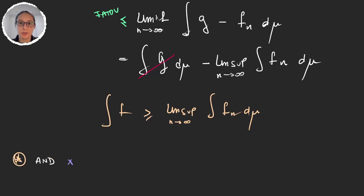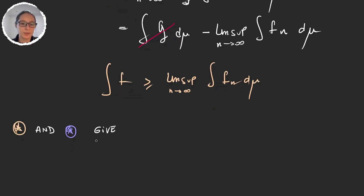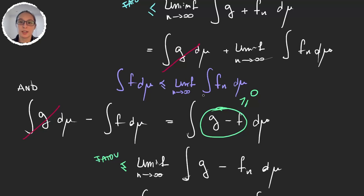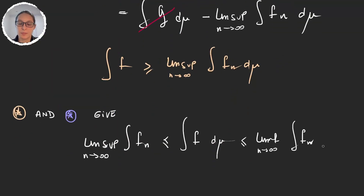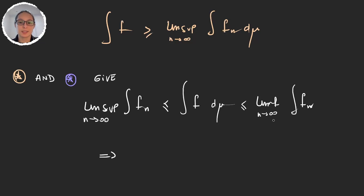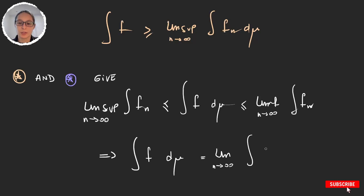Now using both inequalities together: the limit inferior of the integrals of fn is less than or equal to the integral of f, and the integral of f is less than or equal to the limit superior. Since the limit inferior is always less than or equal to the limit superior, we have equality. Therefore the limit exists and equals the integral of f. So the integral of f equals the limit of the integrals of fn, and that finishes the proof of the Dominated Convergence Theorem.